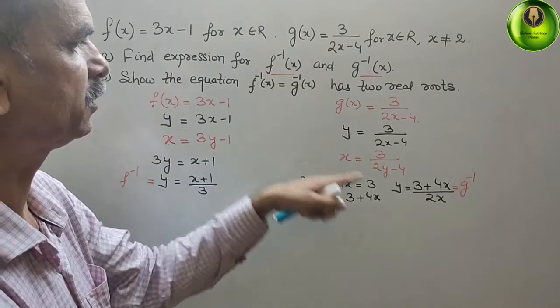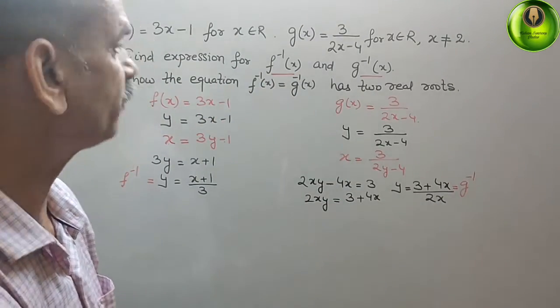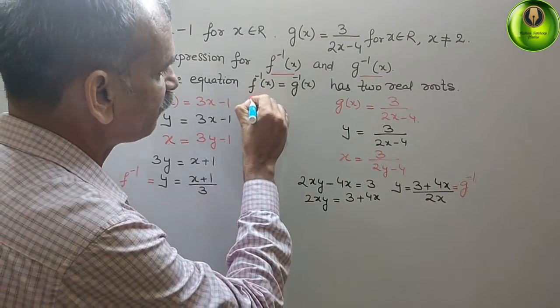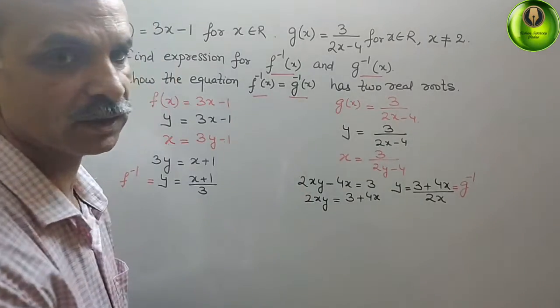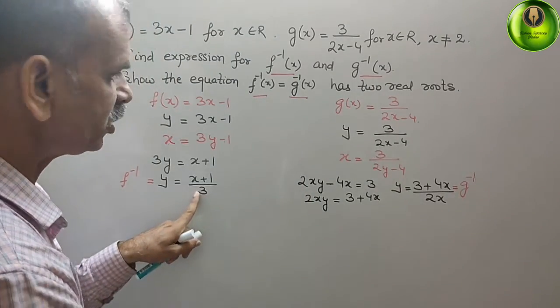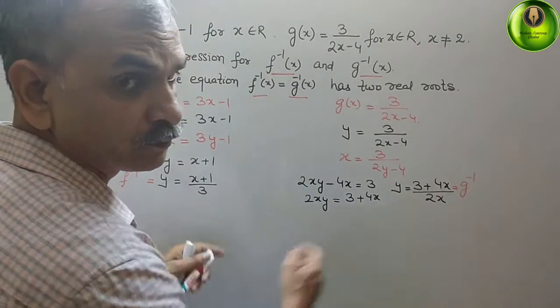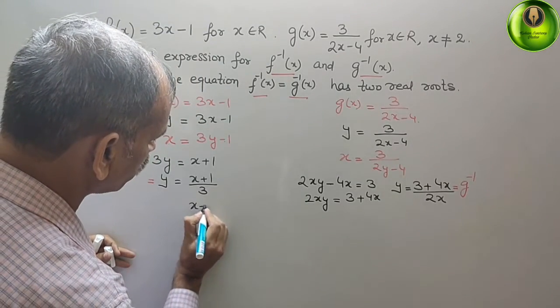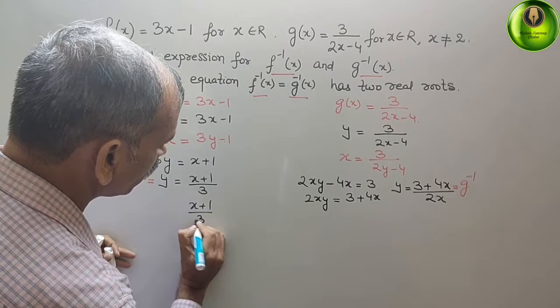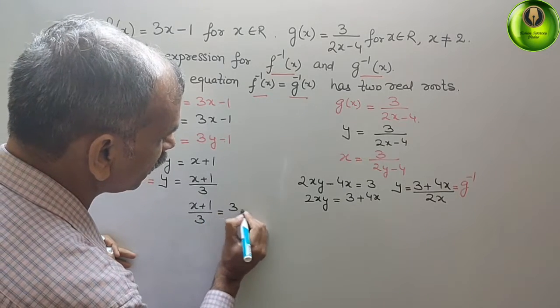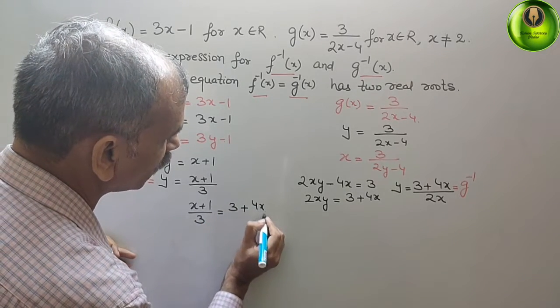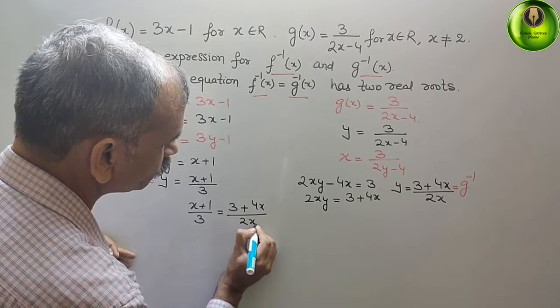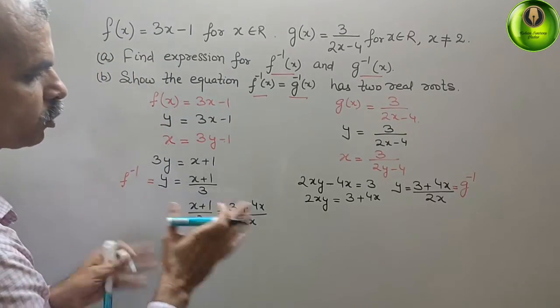We have solved this. Now what they have told? This f inverse equals g inverse. That means this is equal to this. So what we will get? x plus 1 by 3 equals 3 plus 4x by 2x.